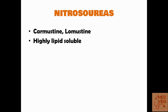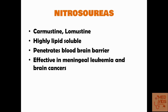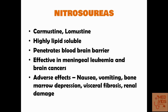Nitrosoureas, including carmustine and lomustine, are highly lipid soluble, allowing them to easily penetrate the blood-brain barrier. They are therefore effective in meningeal leukemia and various brain cancers. Adverse effects include nausea, vomiting, bone marrow depression, visceral fibrosis affecting organs such as the lungs, and kidney damage.